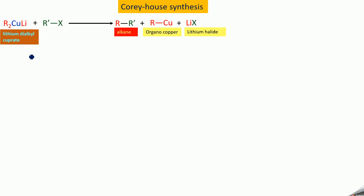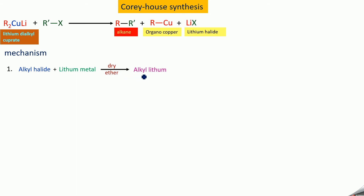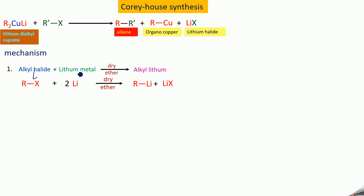For that we will see the mechanism. The mechanism involved in preparing R₂CuLi — lithium dialkyl cuprate — involves two steps. In the first step, you take an alkyl halide treated with lithium metal, solvated with dry ether, and you will be getting alkyl lithium. This is the first step.